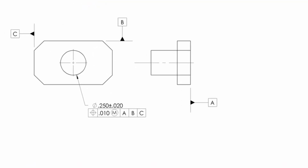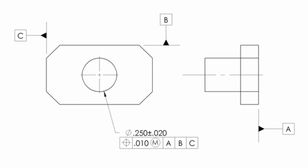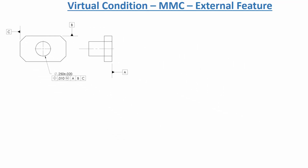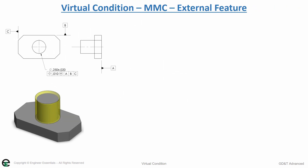Let's move on to virtual condition on an external feature for max material condition. We have the same type of part, only now it's an external feature instead of an internal feature, and we're still using the MMC modifier. In this case, it's your outer boundary that you're controlling with the virtual condition.